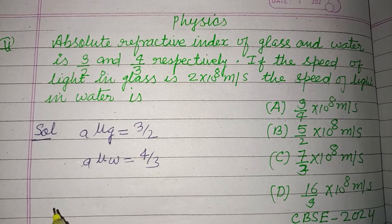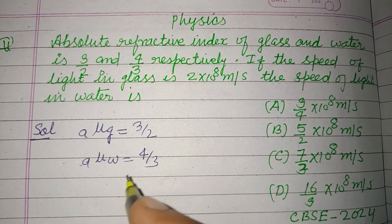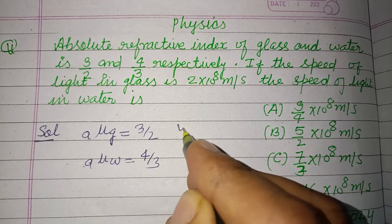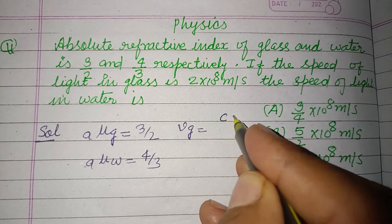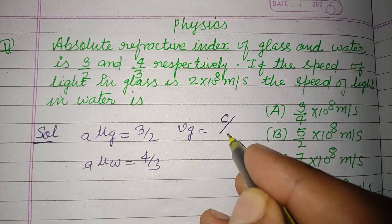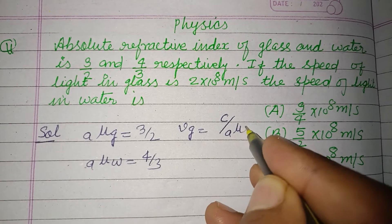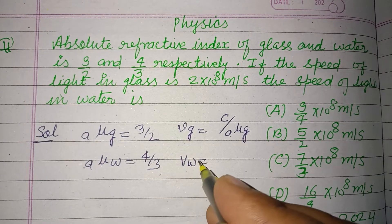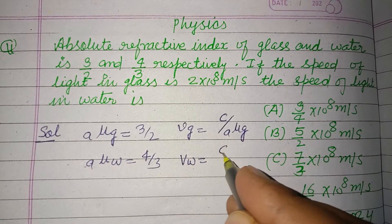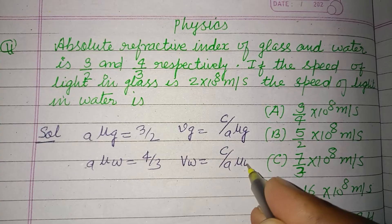The speed of light in glass is speed of light in air upon refractive index of glass. So a mu g. Similarly, speed of light in water equals c over a mu w.